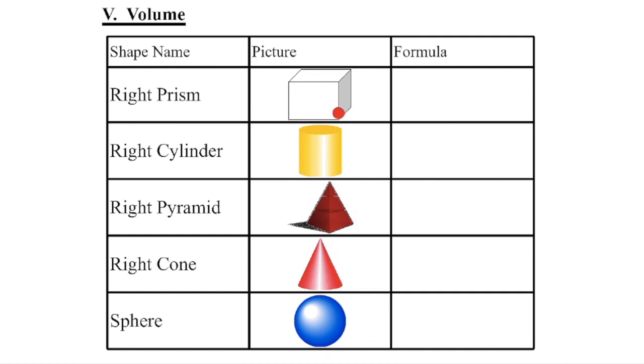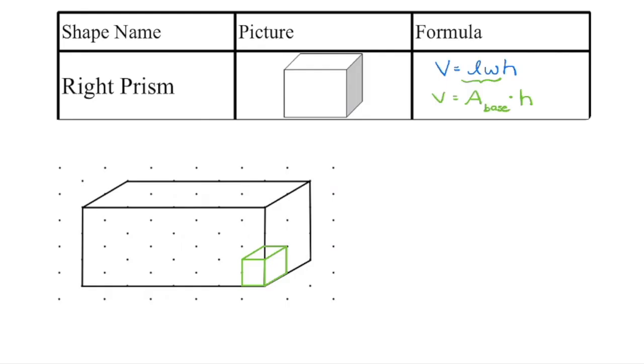Volume is the amount of space within an object or the capacity of that object if we were to fill it completely to the top. You may already know that the formula for volume of a right prism is length times width times height.